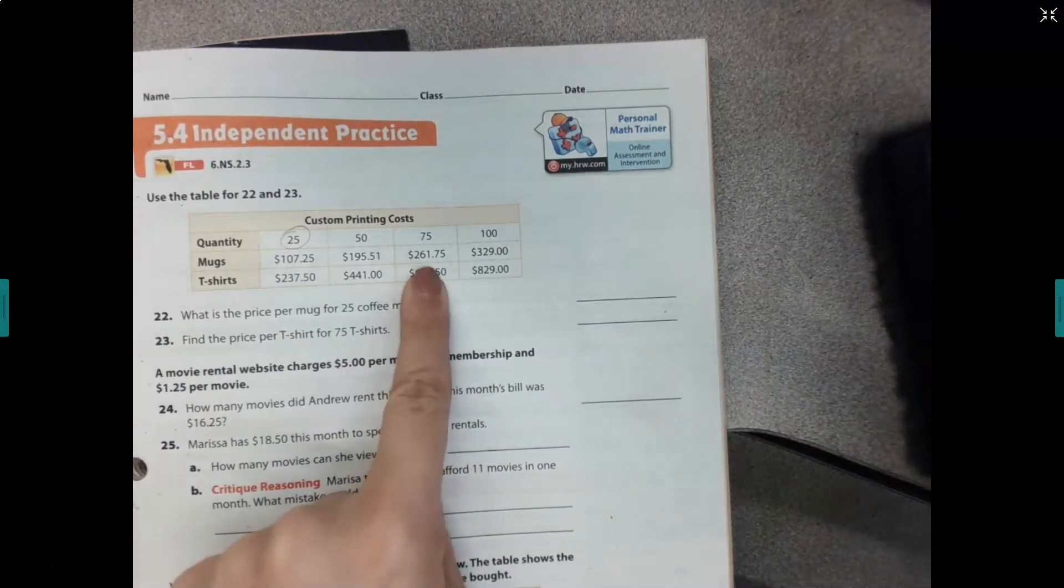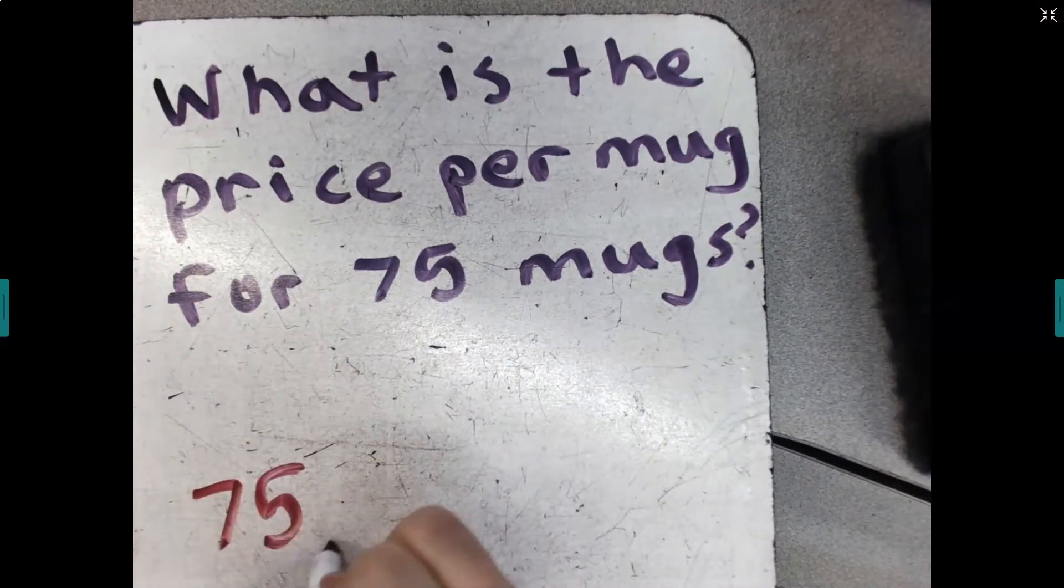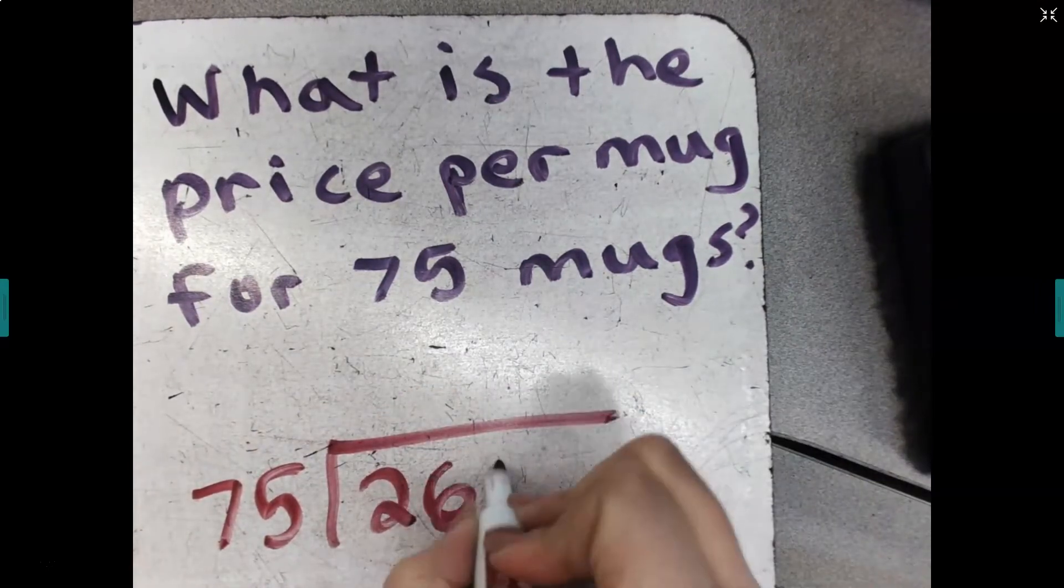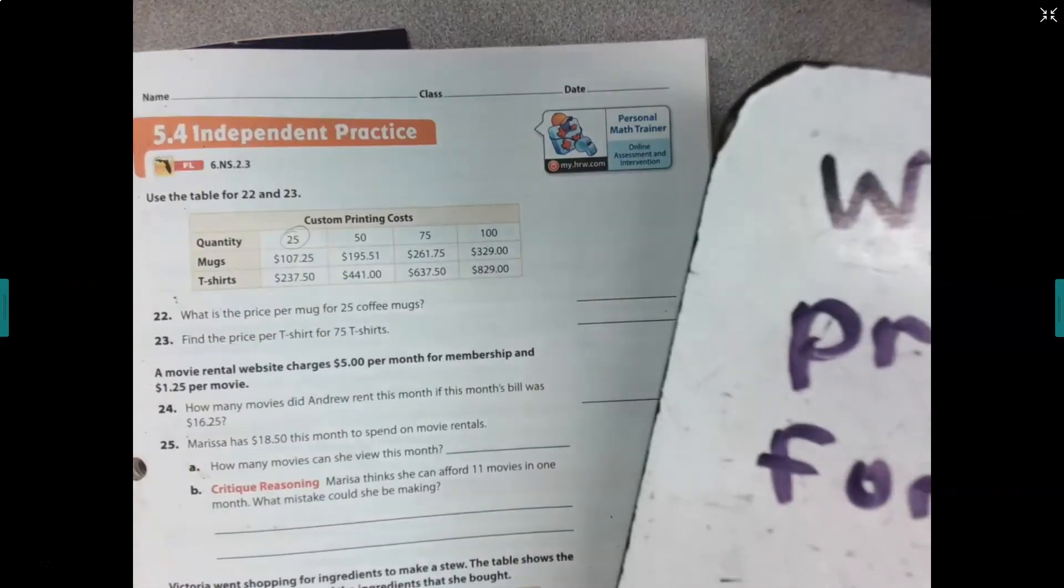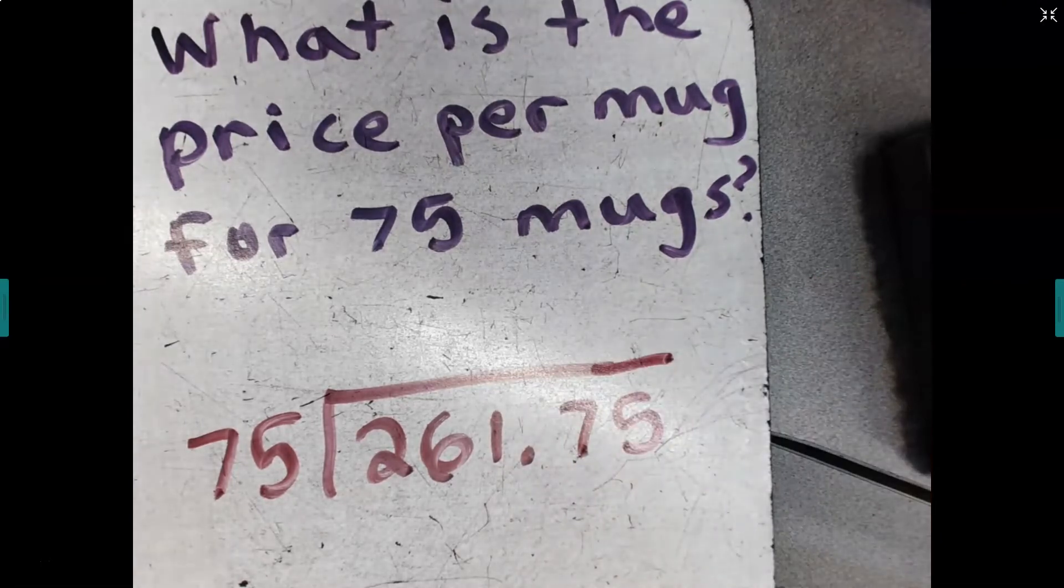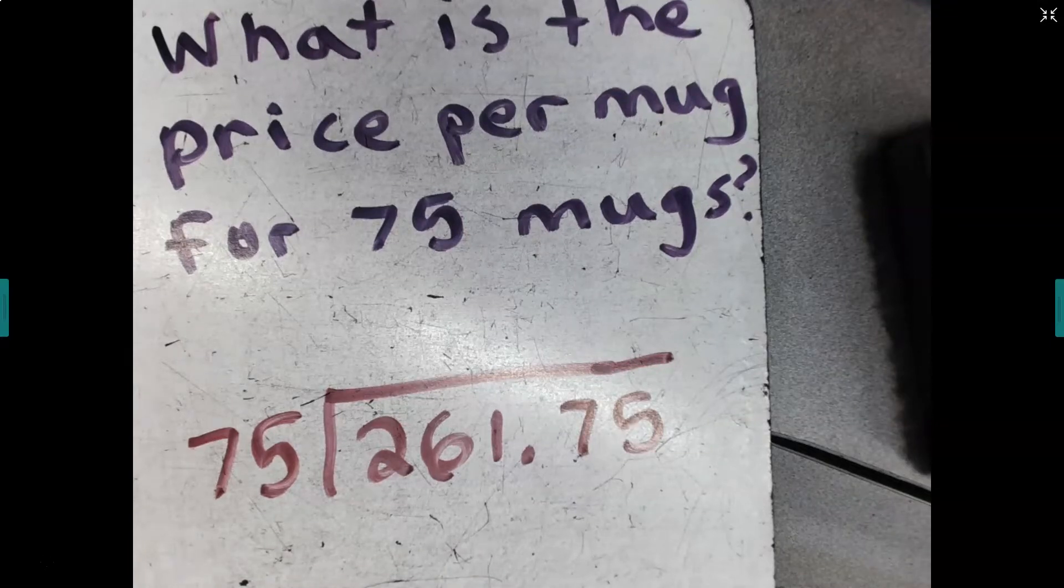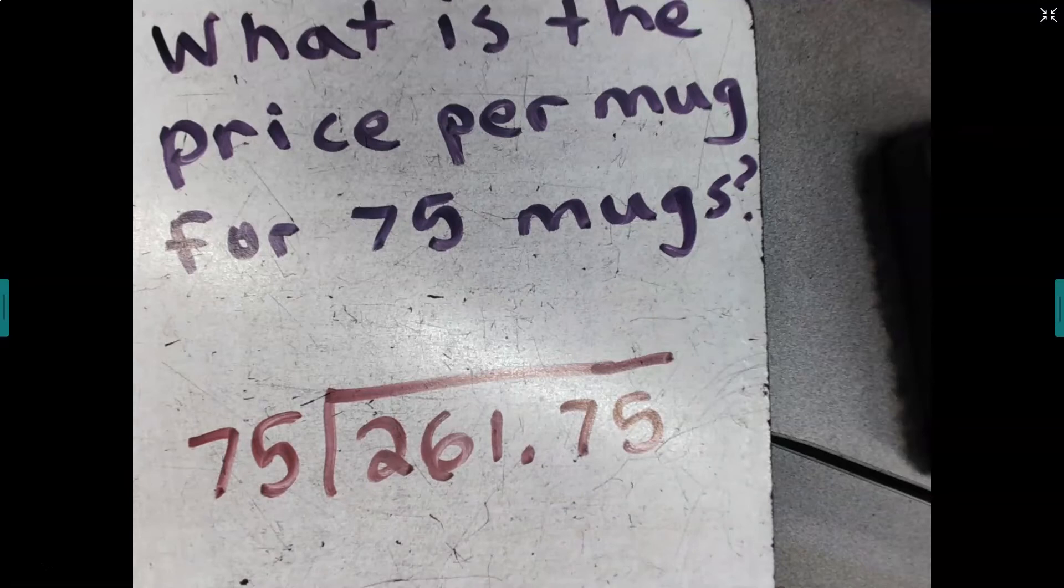So let's look here. For 75 mugs, it would cost $261.75. So that means to find the price of one, I just need to simply do this division. Let me double check myself here. So finding the price per mug over this amount is as simple as doing this division. So I'm going to kind of quickly go through this division.